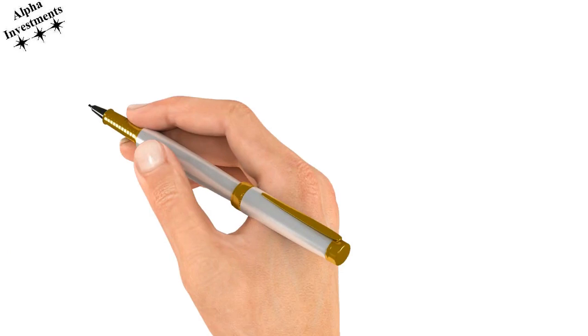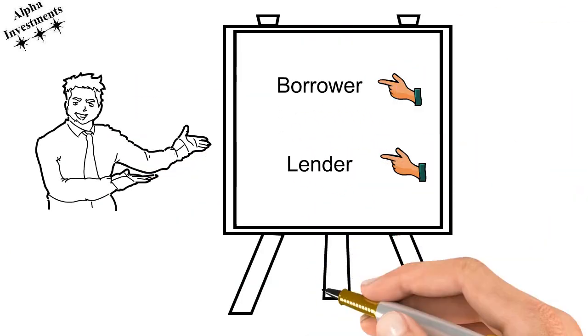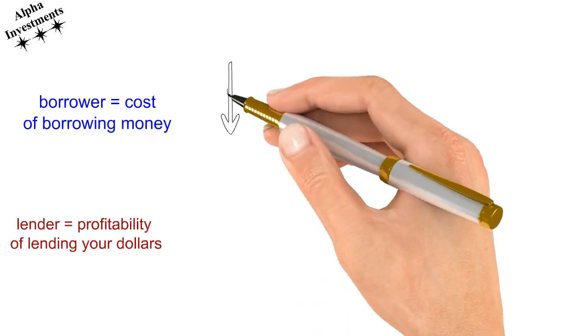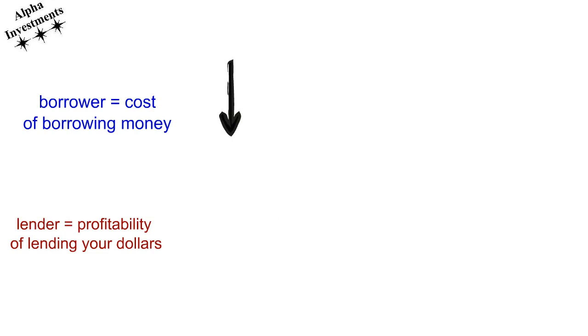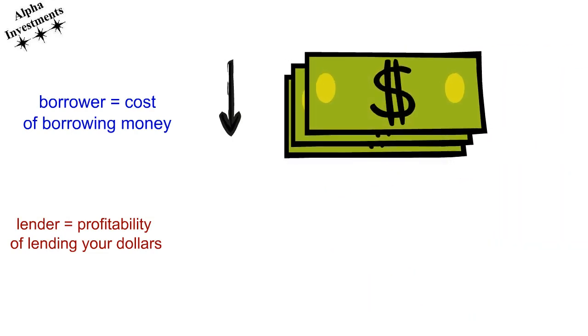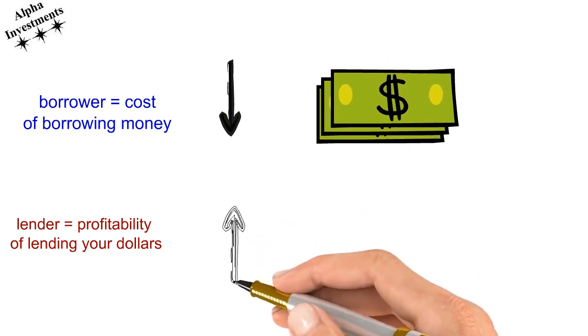There's two perceptions behind interest rates: one is by the borrower and one is by the lender. From the perception of the borrower, interest rates are the cost of borrowing. When interest rates are high you have to pay more to borrow money, and when interest rates are low you pay less. From the perspective of the lender it's basically in reverse. When interest rates are high, lending your money is more profitable, and when interest rates are low, lending your money is less profitable.